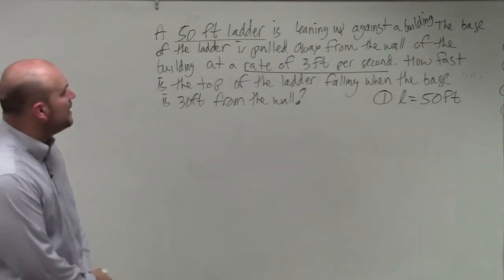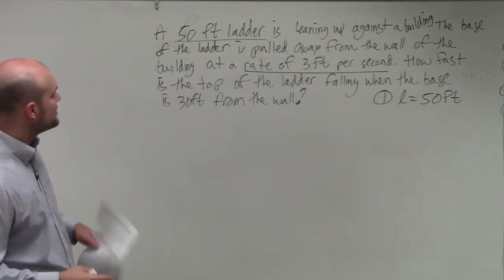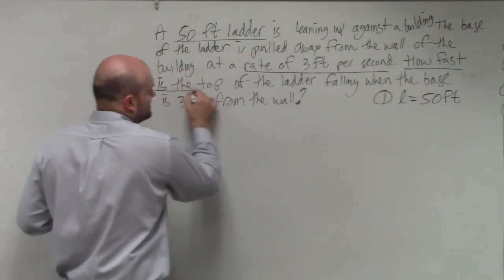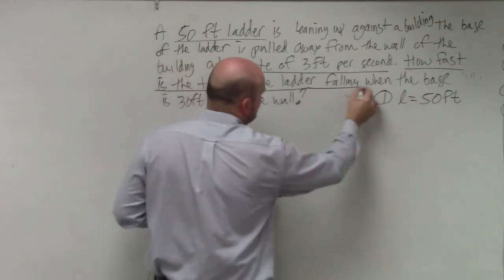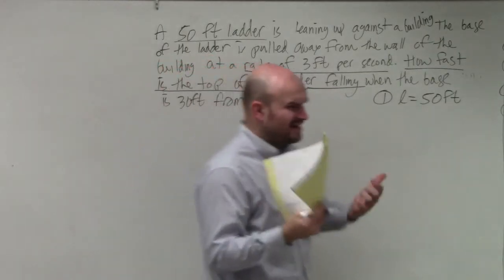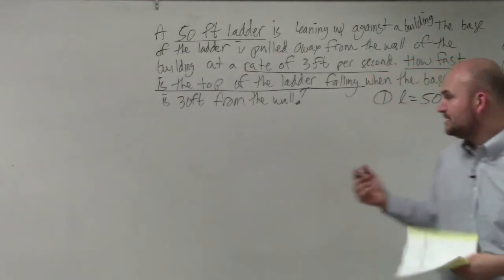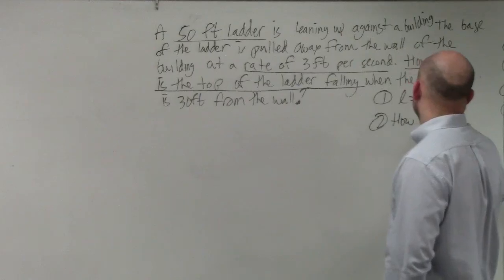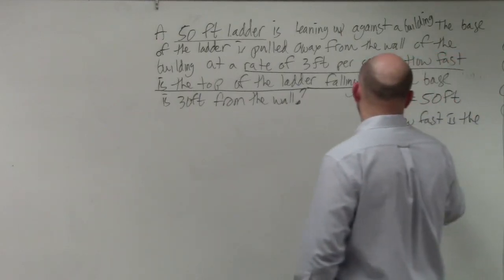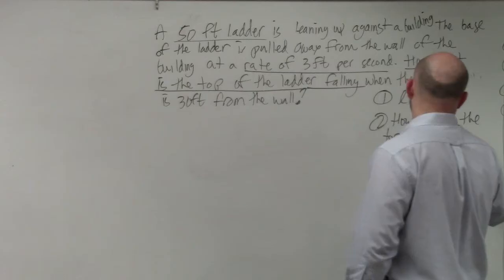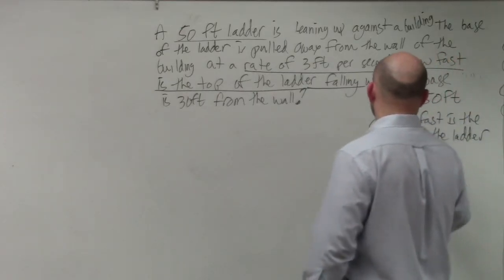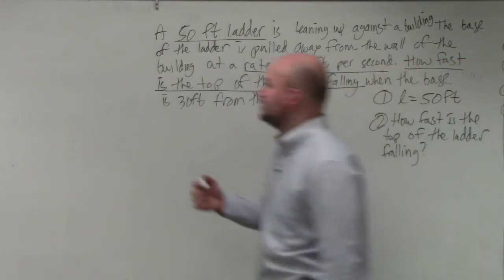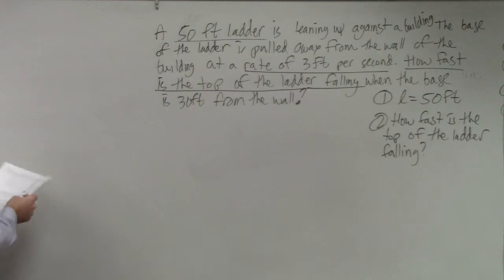What they're asking is how fast is the top of the ladder falling when the base is 30 feet from the wall. To really understand the other variables, I think what would be important is to draw a picture.